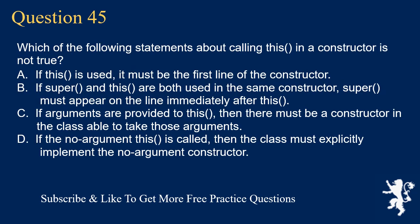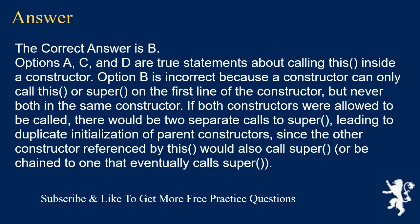Question 45. Which of the following statements about calling this in a constructor is not true? A. If this is used, it must be the first line of the constructor. B. If super and this are both used in the same constructor, super must appear on the line immediately after this. C. If arguments are provided to this, then there must be a constructor in the class able to take those arguments. D. If the no-argument this is called, then the class must explicitly implement the no-argument constructor. The correct answer is B. A constructor can only call this or super on the first line — never both in the same constructor.